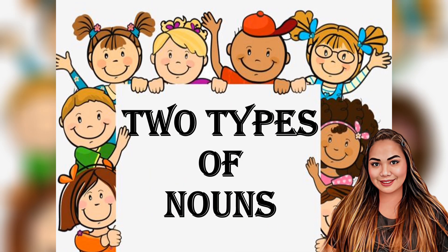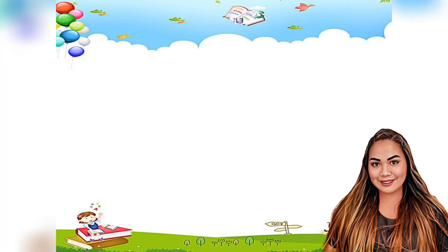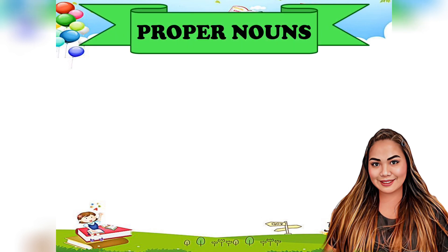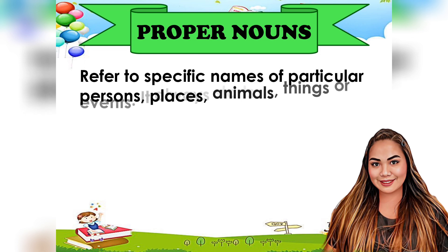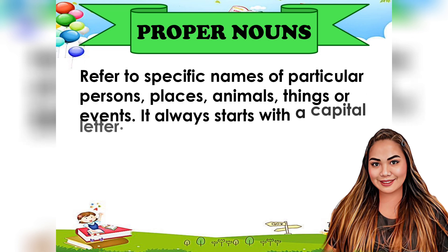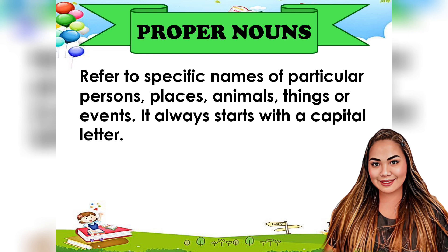There are two types of nouns. The first are proper nouns. These refer to specific names of particular persons, places, animals, things, or events. It always starts with a capital letter.